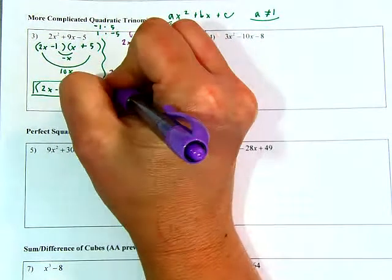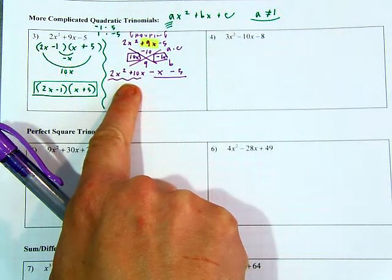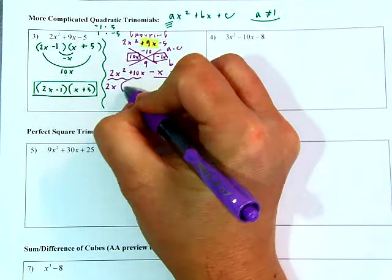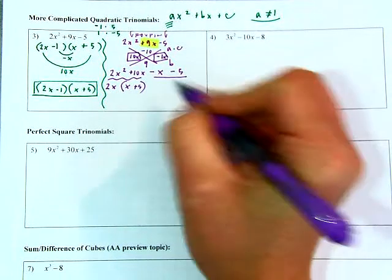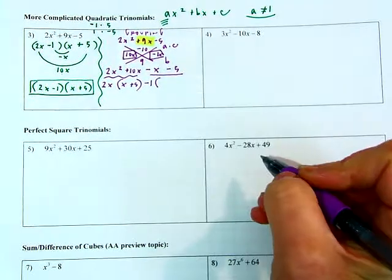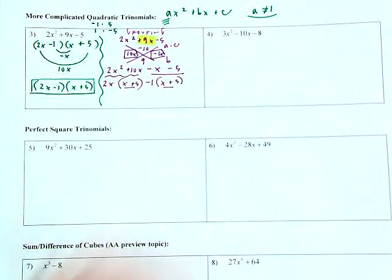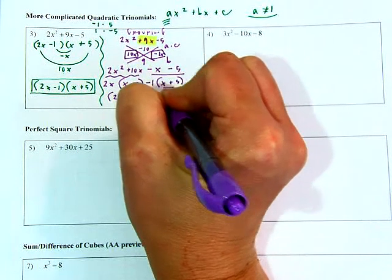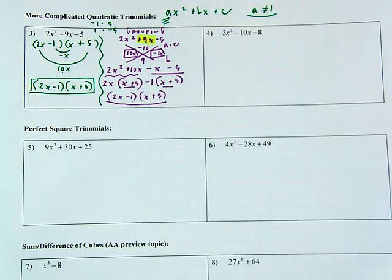Now I group the first two terms and the last two terms and factor by grouping. For the first two, their GCF is 2x: dividing out 2x leaves x plus 5. For the last two, all I can divide out is negative 1, leaving x plus 5. These packages match, so I can rewrite it as 2x minus 1 times x plus 5 — the same answer as before. Even if the factors came out in a different order, it's still the same two factors.